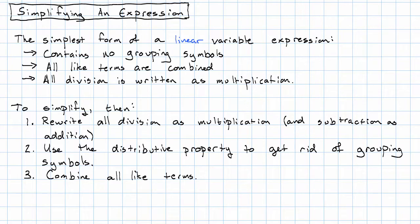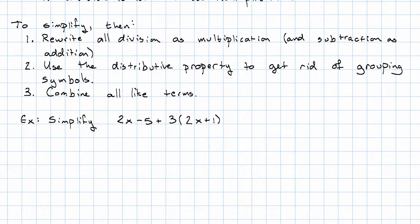Let's see what this looks like. We're going to simplify the expression 2x minus 5 plus 3 times the quantity 2x plus 1. Now I don't have any division here, so there isn't much work to do in step 1. I am going to rewrite my subtraction as addition.